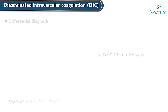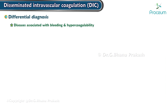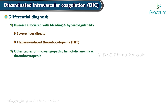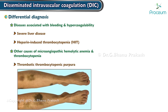Differential diagnosis includes diseases associated with bleeding and hypercoagulability, like severe liver disease or heparin-induced thrombocytopenia (HIT), other causes of microangiopathic hemolytic anemia, and thrombocytopenia such as thrombotic thrombocytopenic purpura.